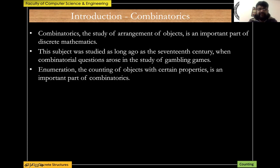When you talk about combinatorics or counting, another important task is enumeration, which is when you count the objects with certain properties. It is an important part of combinatorics itself. In arrangement of objects, you sometimes need to count the objects that obey certain properties or certain characteristics.